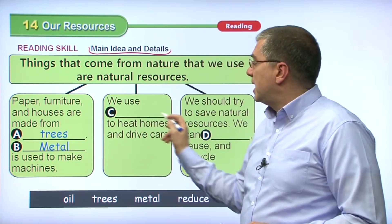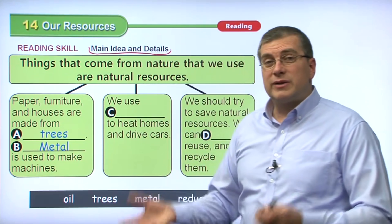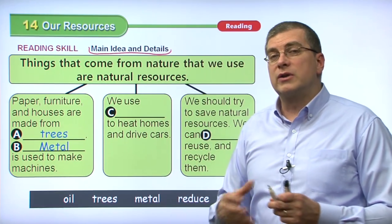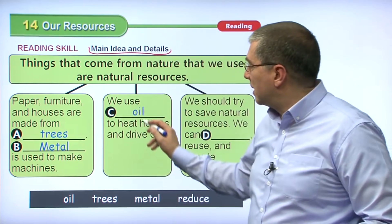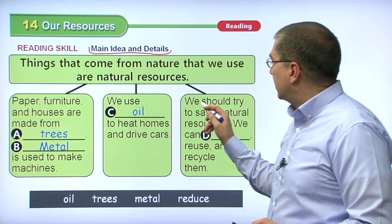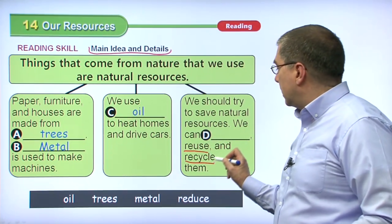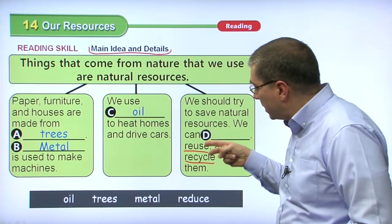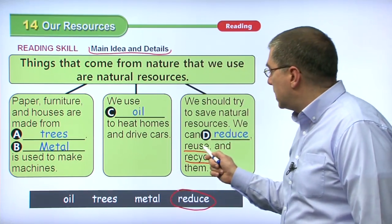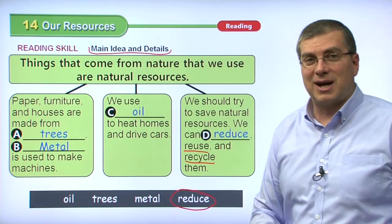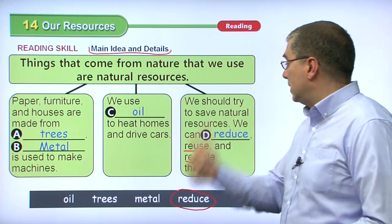Let's go over our reading comprehension questions. Number one: trees and blank are important natural resources. Things we find in nature — we find metal in nature: gold, silver, copper. So the answer is metal. Number two: we can reuse glass and plastic bottles. Paper bottles don't hold anything; gasoline is a liquid, not a bottle material. The most common bottle materials are glass and plastic, so the answer is C. Number three: what is gasoline made from and what is it used for? It is made from oil and it is used in cars — both true, so A is correct. Number four: if we reduce, reuse, and recycle, our natural resources will last longer. If we use less, there will be more available later. That is B, the correct answer.